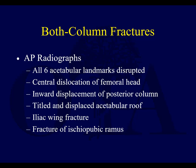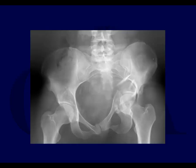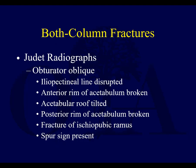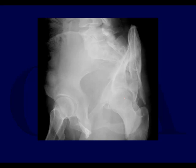On AP radiographs, all landmarks are disrupted, you can get central dislocation of the femoral head, inward displacement, posterior column disruption, and a displaced acetabular roof. Here's an associated both column fracture — you can see a pelvic binder has been applied. On the obturator oblique, you see disruption of the iliopectineal line. The spur sign is visible here — the femoral head is medial, and you can see some degree of secondary congruence with joint fragments moving with the head. The spur sign marks where the acetabulum belongs, reduced all the way back there.